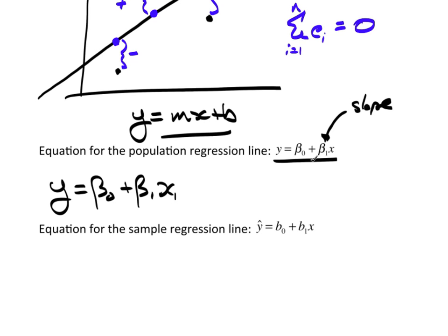Now we use betas to represent the population parameters. So this is the population parameter for the y-intercept. This is the population parameter for the slope of the regression line. For sample regression, we use y hat. We put that little hat over it that indicates it's a sample regression line. And it's an estimated value of y. And we use the lowercase b0 and b1 for the y-intercept and the slope of the regression line.